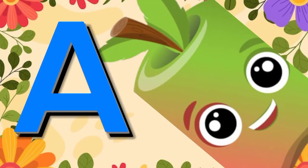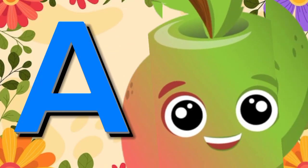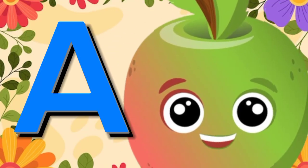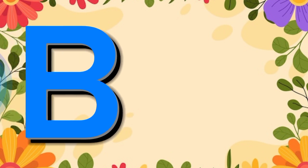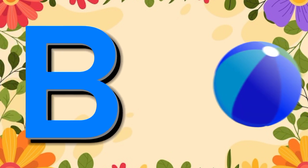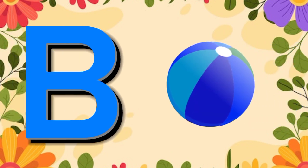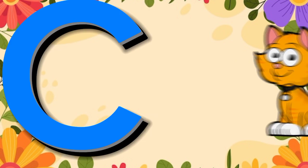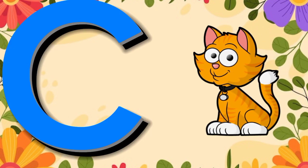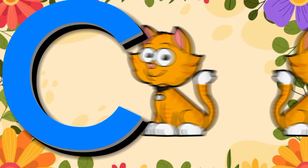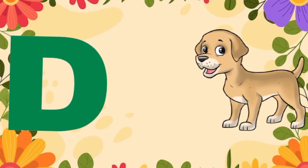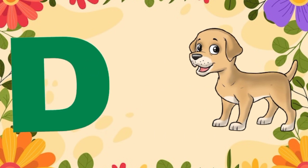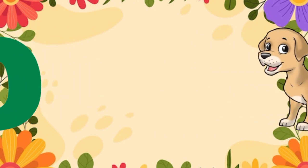A is for apple, a-a-apple. B is for ball, b-b-ball. C is for cat, c-c-cat. D is for doll, d-d-doll.